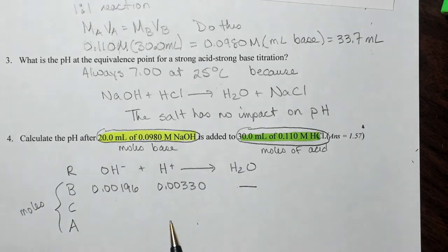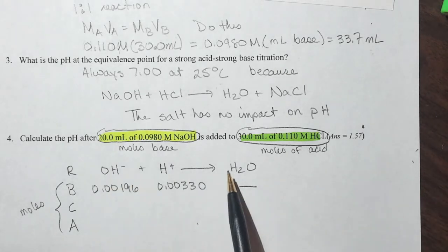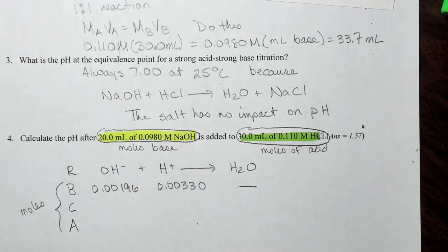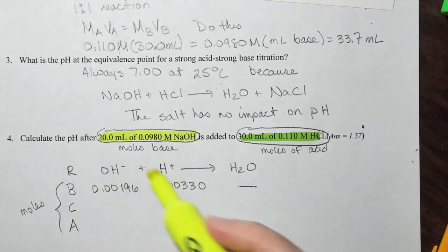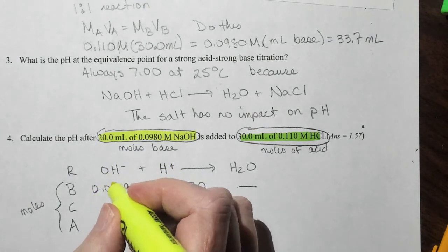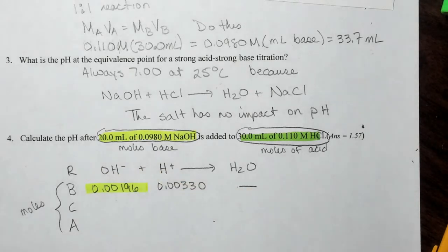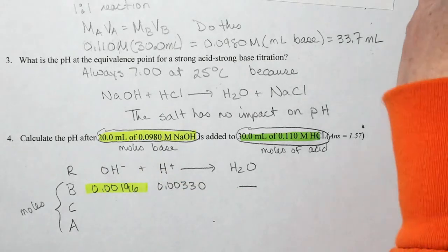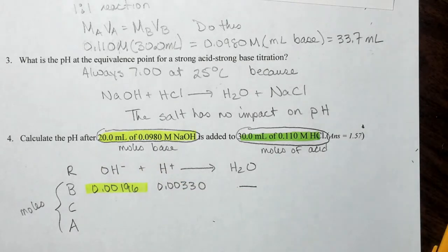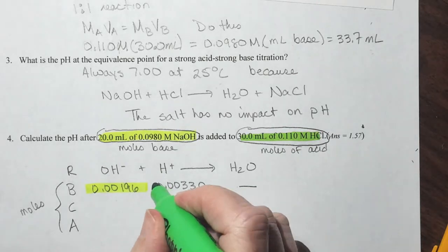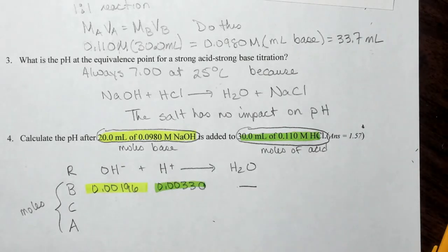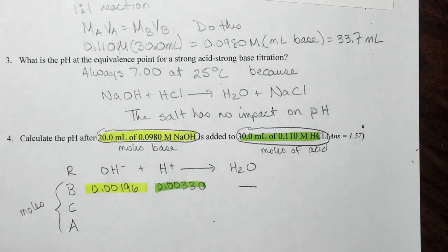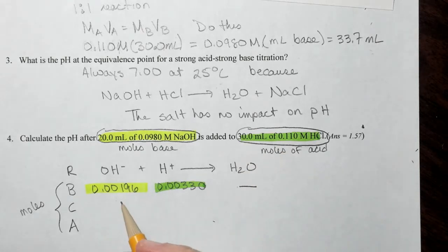Alright, so I've set up the first part of this. We've got our reaction here. And we have the 20 mLs of 0.0980 molar sodium hydroxide. And from that we can figure out that we have 0.00196 moles of the hydroxide and 0.00330 moles of the hydronium ion. Just 0.030 liters times 0.110 molar. So our limiting reagent is the hydroxide.